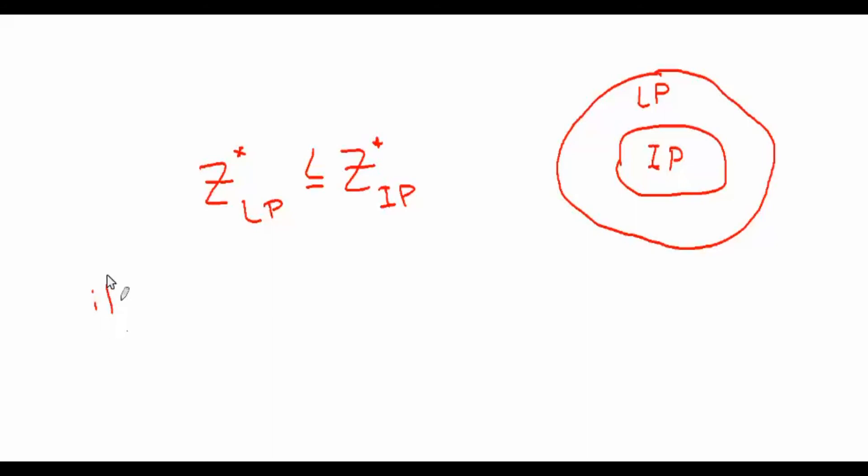If you get that your Z star LP, your best LP you can get, is strictly greater than the optimal objective function value for the IP, then you have a problem.